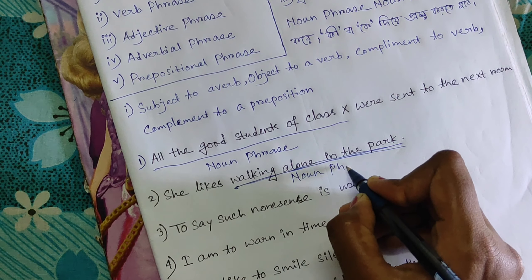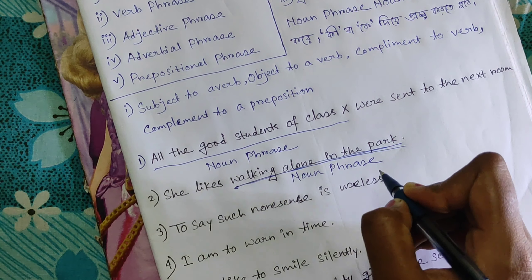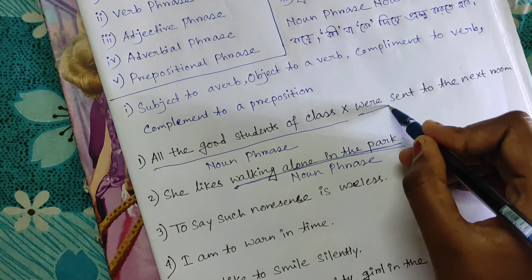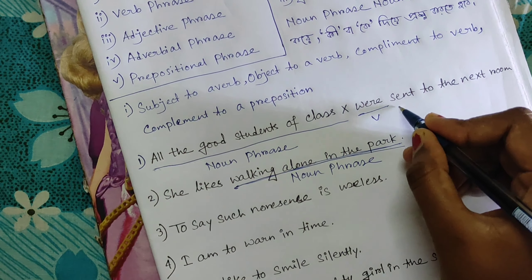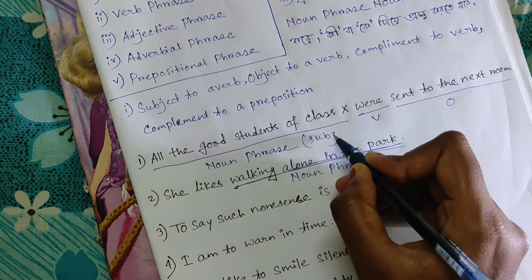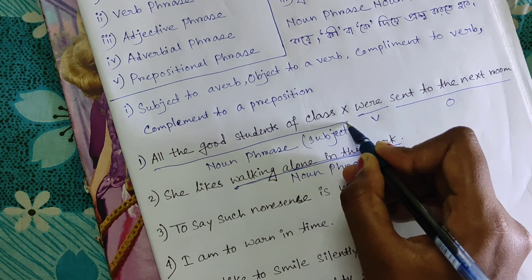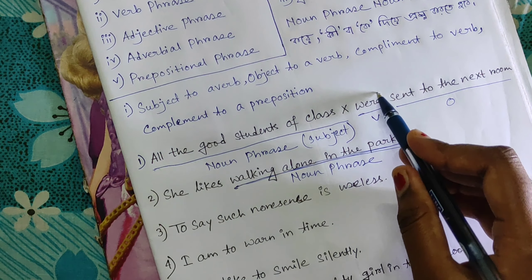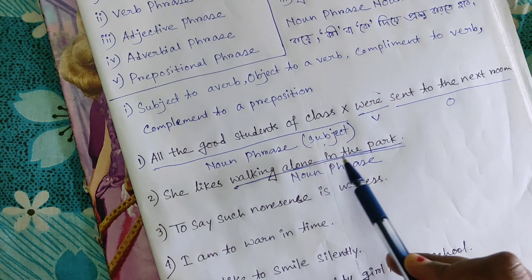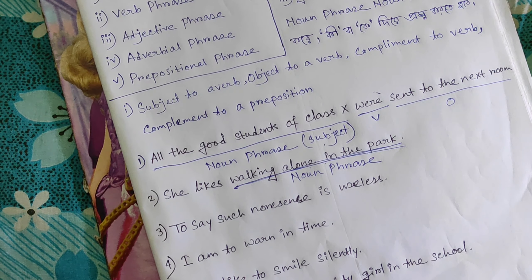Next example: 'Walking alone in the park.' This starts with '-ing' and is a gerund phrase. 'Walking alone in the park' is a noun phrase. In the sentence 'She likes walking alone in the park,' this phrase functions as the object.